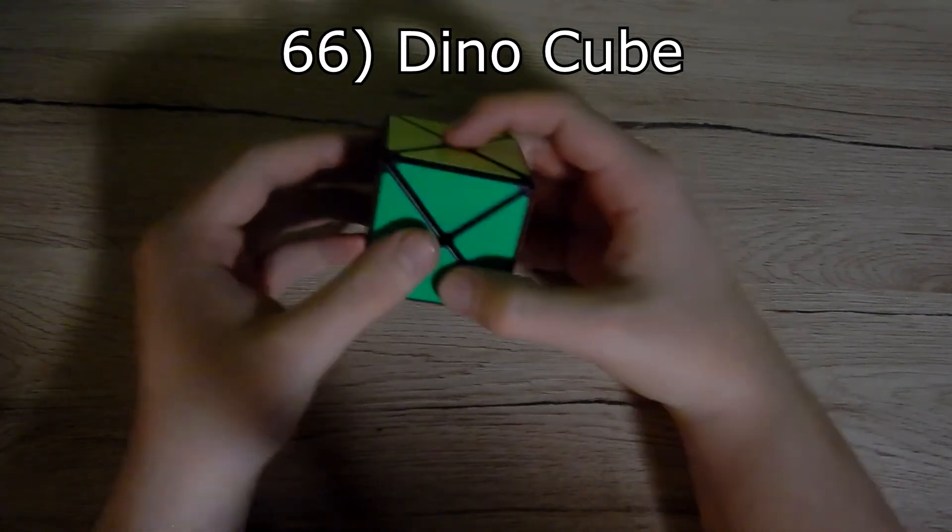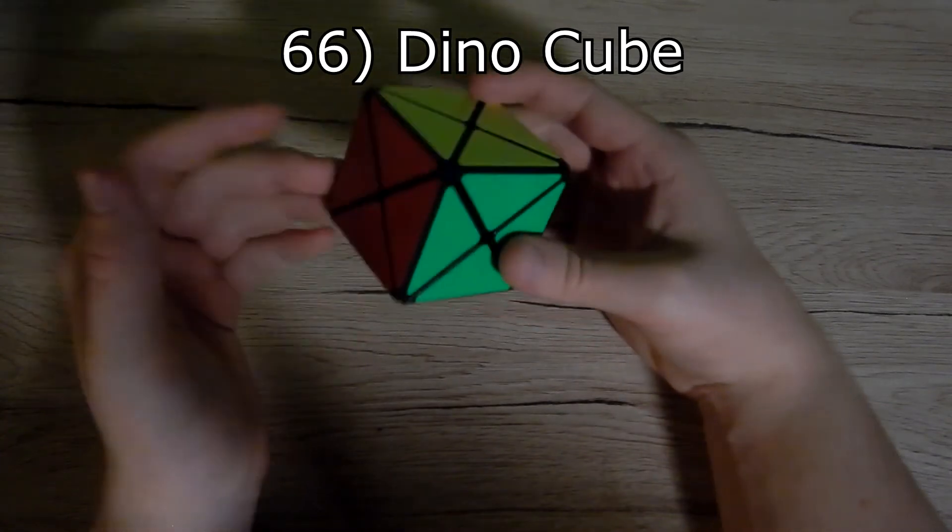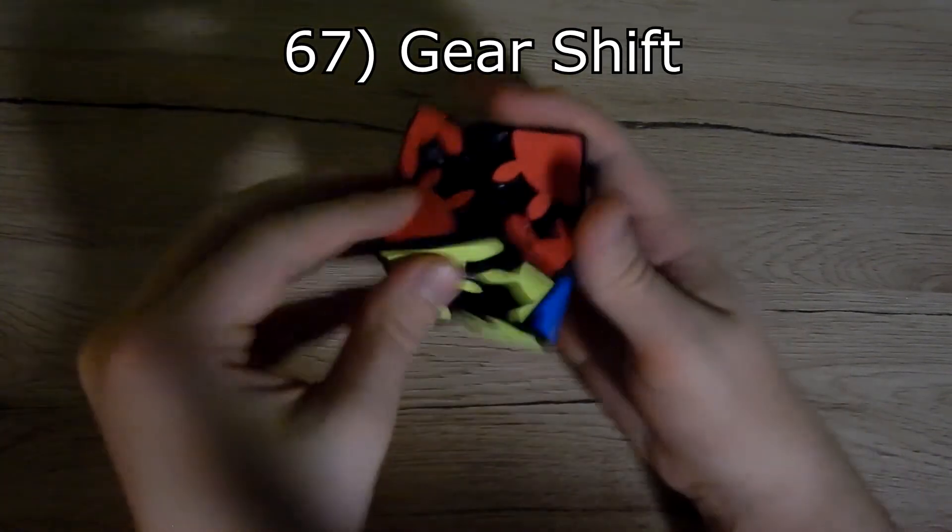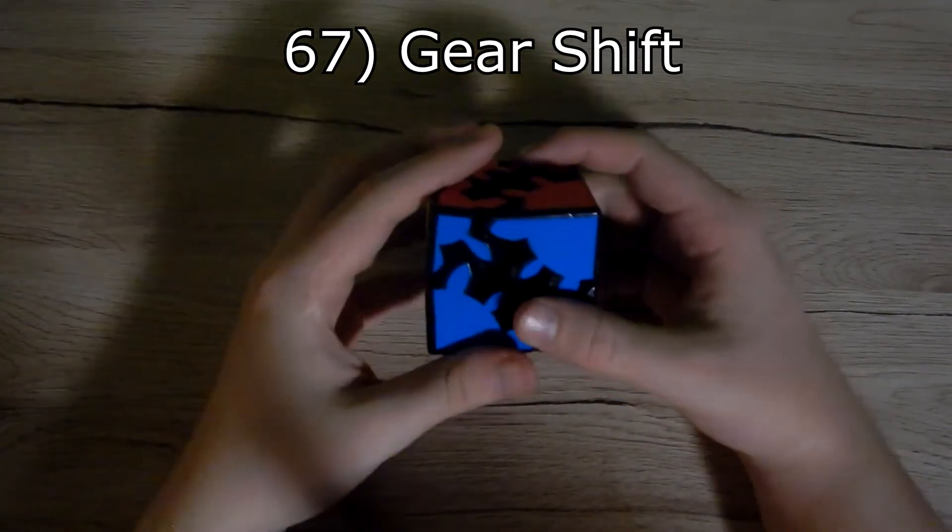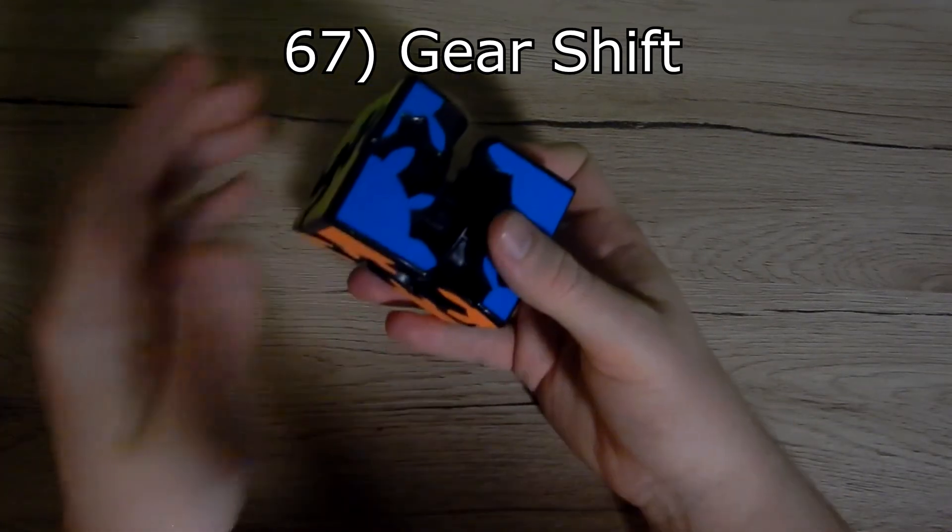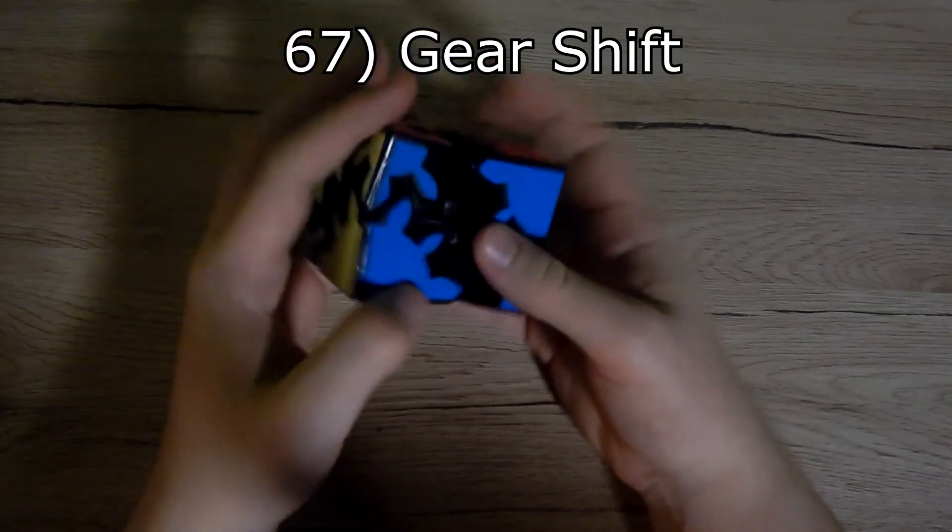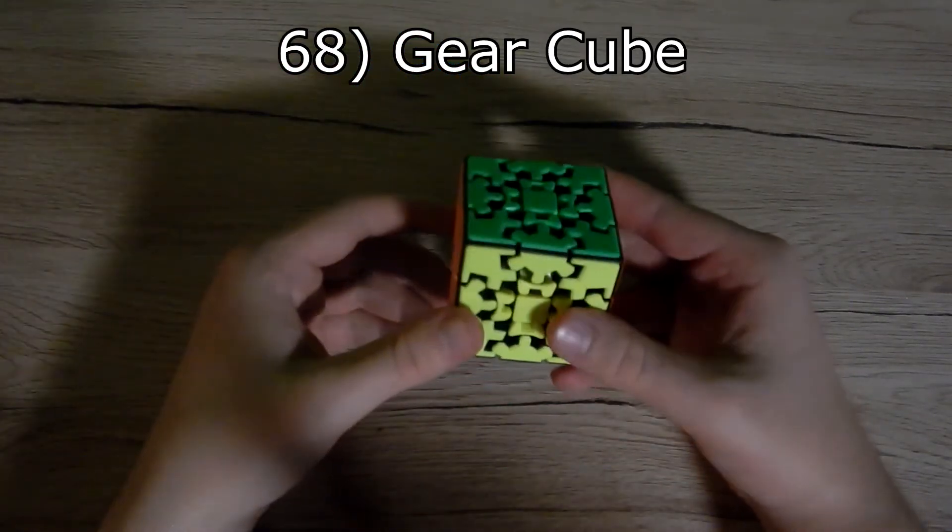Next we have a gear shift. It can turn like this, but something special is you do this, you can turn the upper and bottom sides. Next we have a gear cube. You can scramble it by just turning 180 degrees like this.